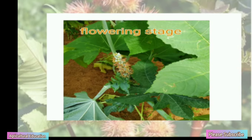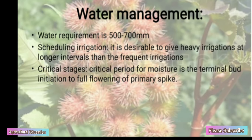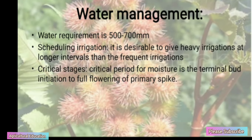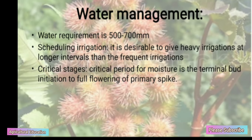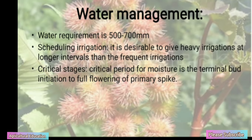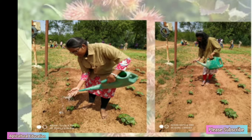Water Management: Water required is 500-700 mm. Scheduling irrigation is desirable — giving heavy irrigation at longer intervals is preferable to frequent light irrigation.